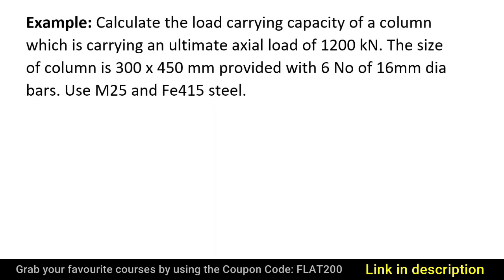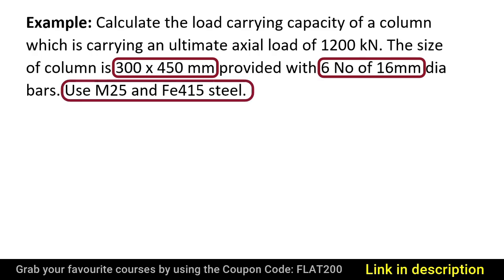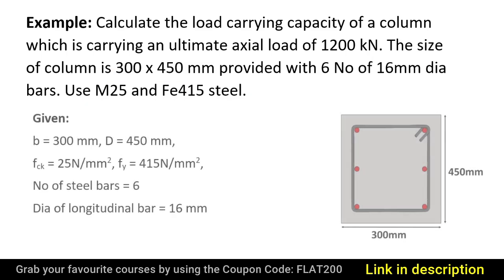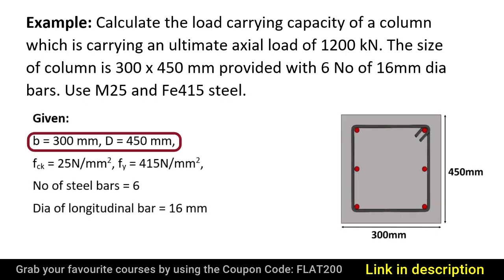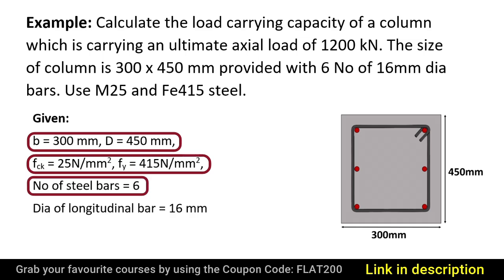For illustration, let's calculate the load carrying capacity of a column having a size of 300 × 450 mm, provided with 6 numbers of 16 mm diameter bars, using M25 grade of concrete and Fe415 steel. So we have the given data: width of column 300 mm, depth of column 450 mm, FCK is 25 N/mm², FY is 415, number of steel bars is 6, and diameter of longitudinal bar is 16 mm.